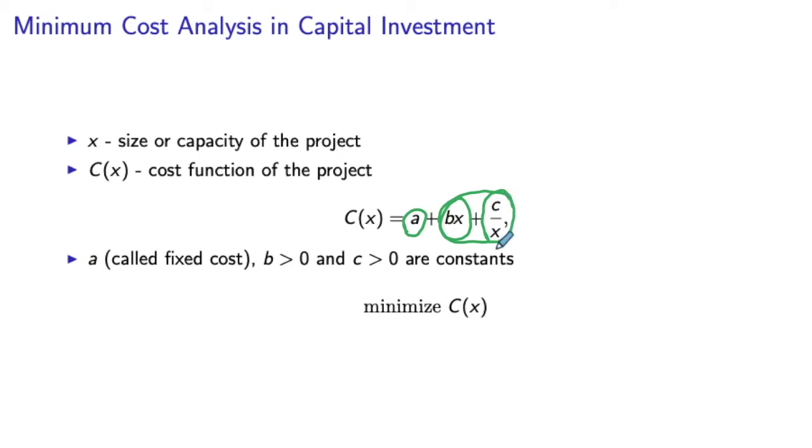So the more units you produce, the less is the contribution coming from this part of the cost. If you want to plot these three types of costs on a single plot, then we have the size of the project here, the cost here, and a is the fixed cost of opening the facility.